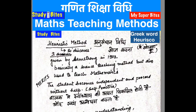The Heuristic Method was introduced by Armstrong in 1902. It is a science teaching method and is also used in mathematics. In this method, students are independent — they can adapt and improve themselves through self-practice. It develops a tradition of self-study, self-practice, and self-discovery.